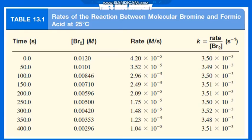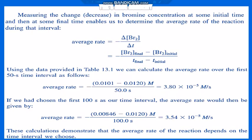From the experimental data table of bromine concentration versus time at 25°C, we can find the rate of reaction. Measuring the decrease in concentration of bromine between an initial and final time enables us to determine the average rate over that interval. Average rate = −ΔBr₂/ΔT = −(final concentration − initial concentration)/(final time − initial time). Using data at 0 and 50 seconds: concentration goes from 0.0120 to 0.0101, giving an average rate of 3.80 × 10⁻⁵ mol/L·s.